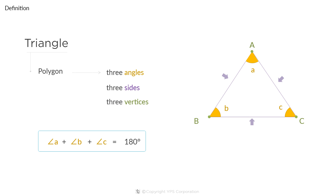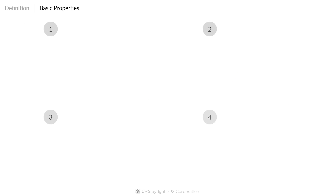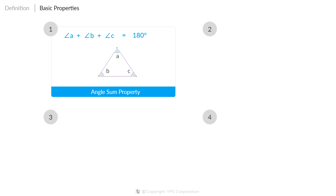As we have now defined what a triangle is, let's move on to the basic properties of a triangle. There are four basic properties of a triangle. Firstly, as you can see, the sum of all internal angles of a triangle is always equal to 180 degrees, which is called the angle sum property of a triangle.